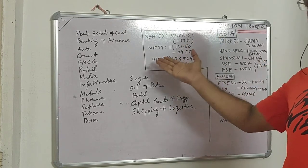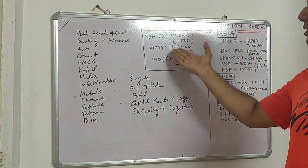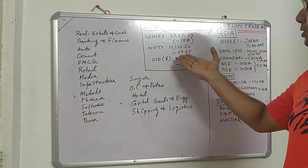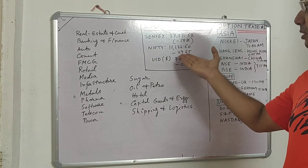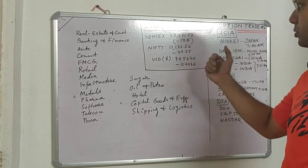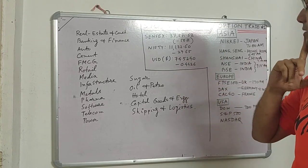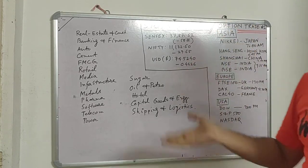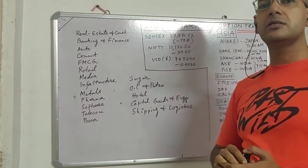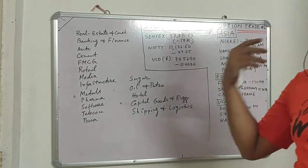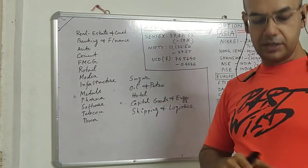Similarly there is Nifty, with today's closing price showing a down of 29 points. There are also things like dollar and other parameters being shown in stock market data.